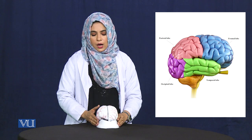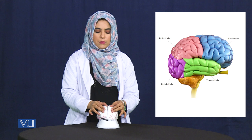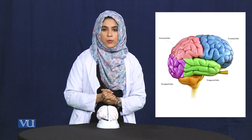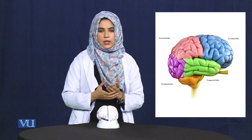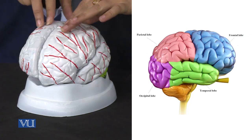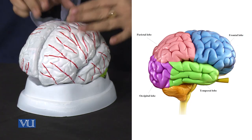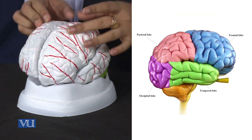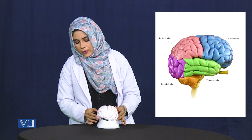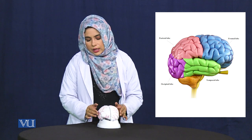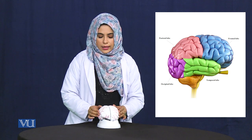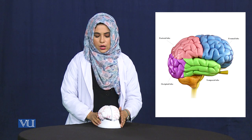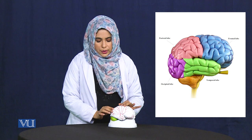The frontal lobe is responsible for executive functions such as decision making, motor planning, and impulse control. The parietal lobe is responsible for spatial awareness and sensation. The temporal lobe plays a key role in auditory processing and memory.